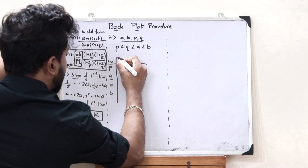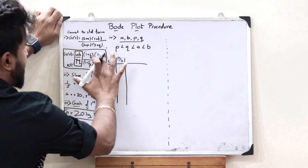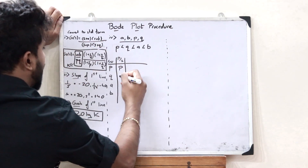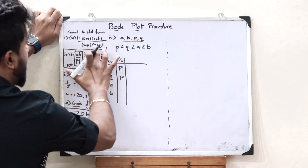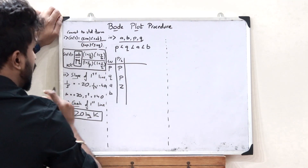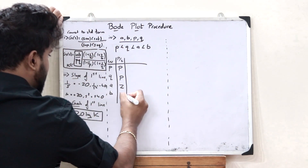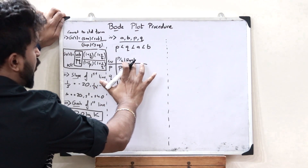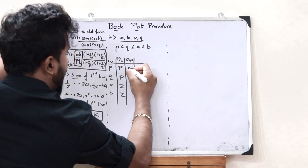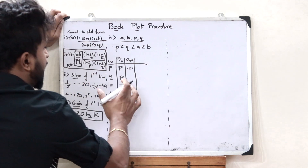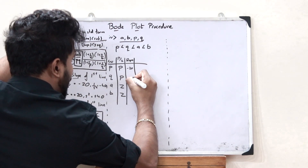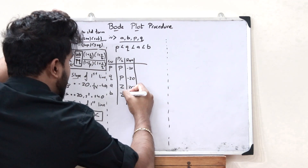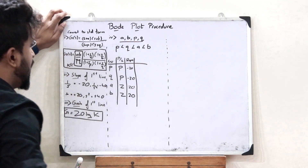Next, we mark whether each term is a pole or a zero. P is in the denominator, so it is a pole. Q is in the denominator, so it is also a pole. A is in the numerator, so it is a zero. B is in the numerator, so it is also a zero. The slope of a pole is −20 dB, so Q is also −20 dB. A is a zero, so it is +20 dB, and B is a zero, so it is also +20 dB.